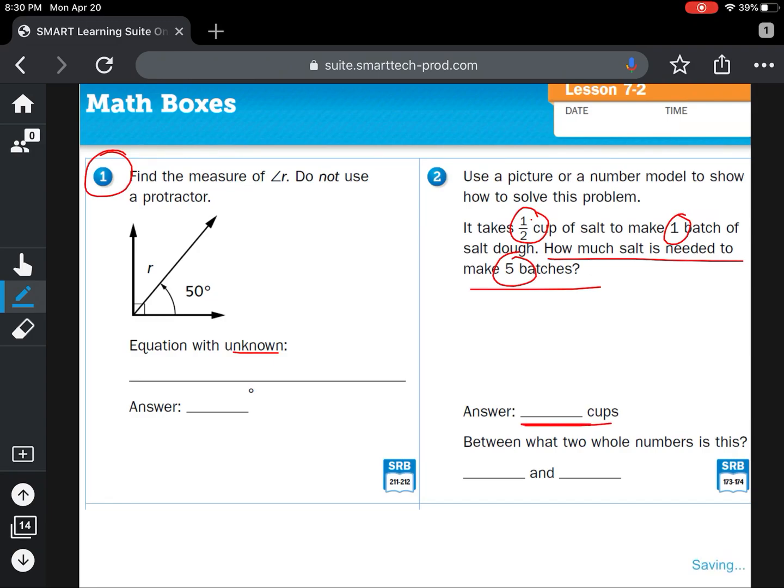In the answer, you write it down here with the unit cups and then tell between what two whole numbers that answer lies. So whatever you get for your answer, think about rounding it down to a whole number and up to a whole number to tell what two whole numbers your answer falls between.